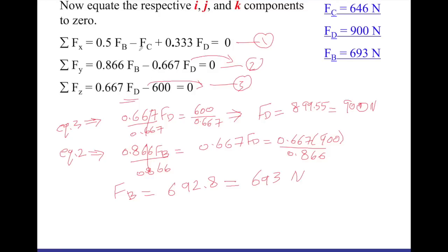You do the same for equation number one — I'll leave that for you. Substitute FD and FB, move FC to the other side and change its sign, and you can get FC = 646 Newtons. I hope this video was helpful. This example showed you how we build the free body diagram for a three-dimensional static system, construct the equations of equilibrium, and solve for the unknown forces. Thank you for watching — until the next video.